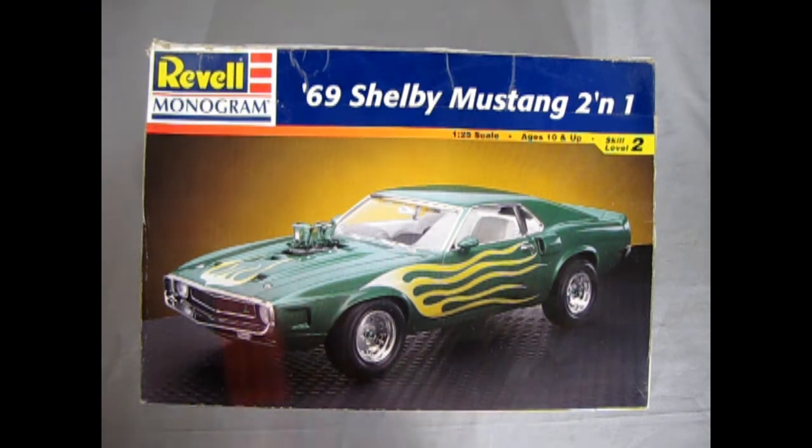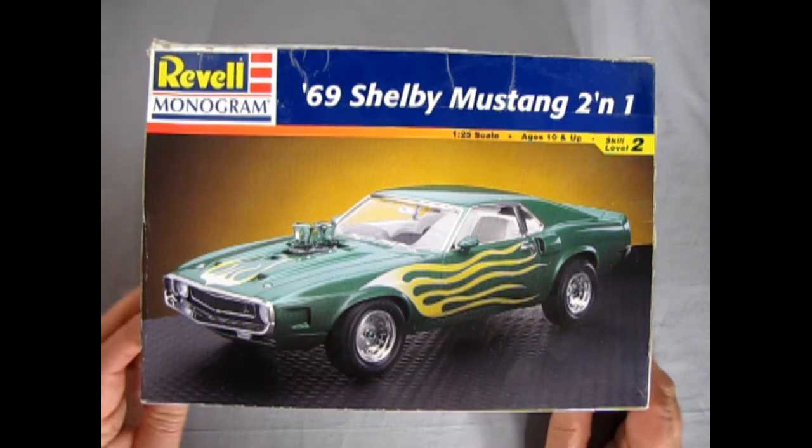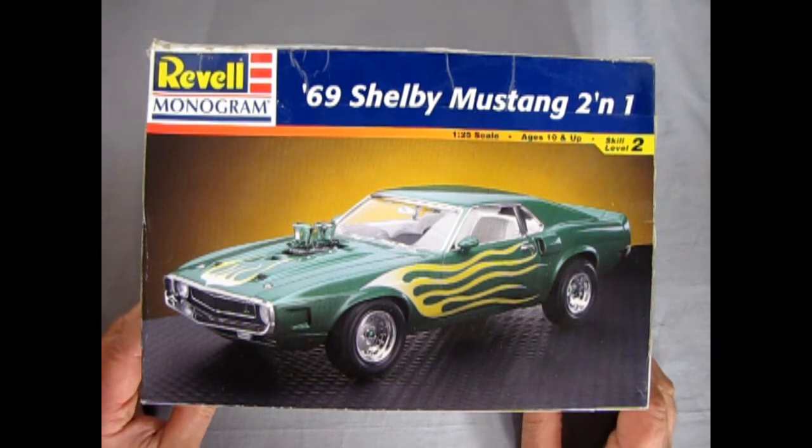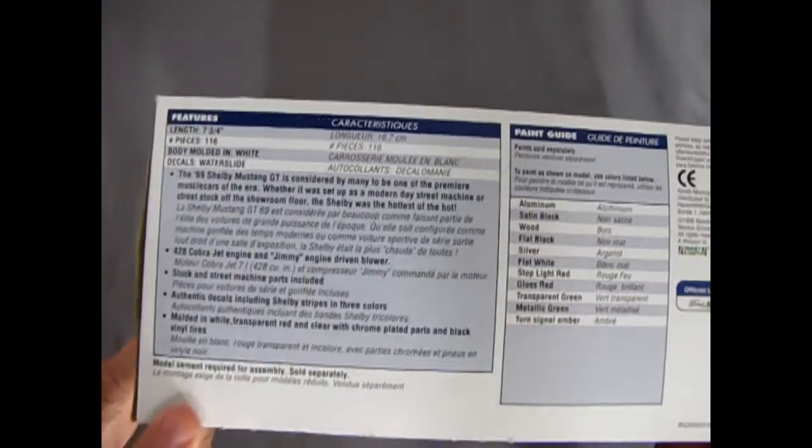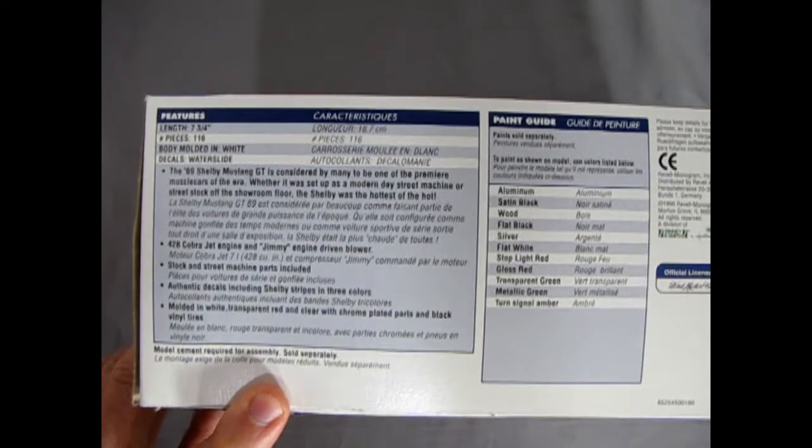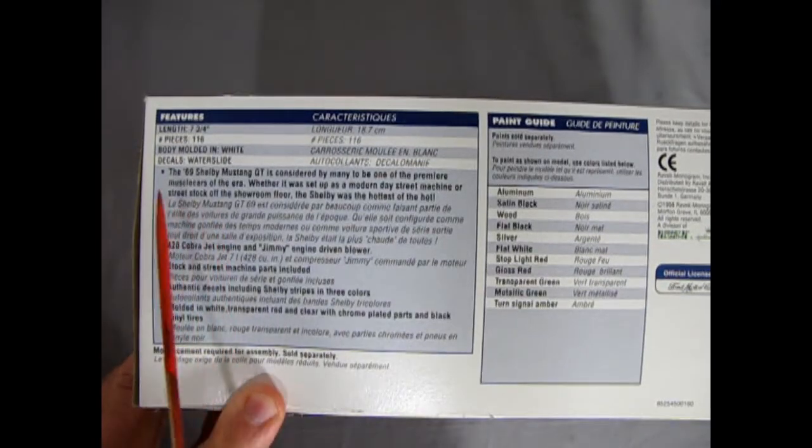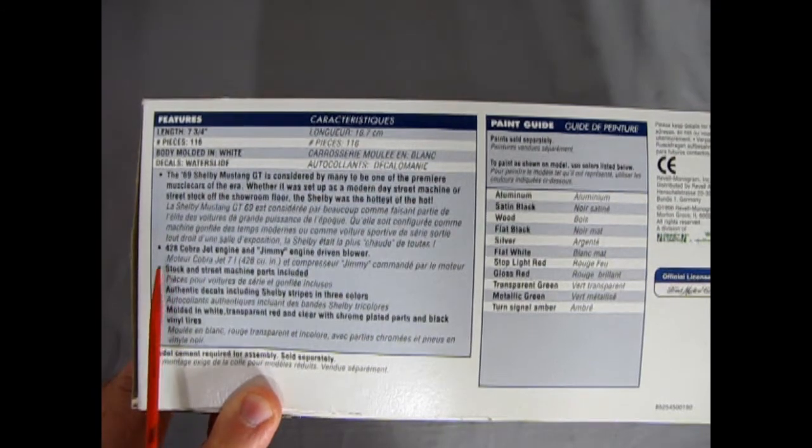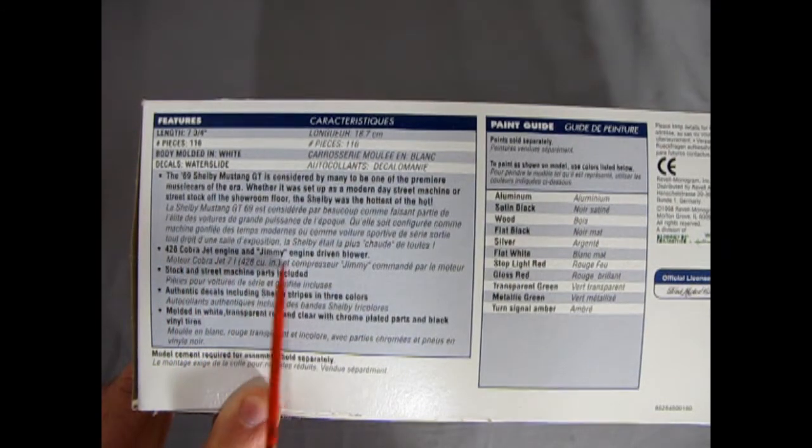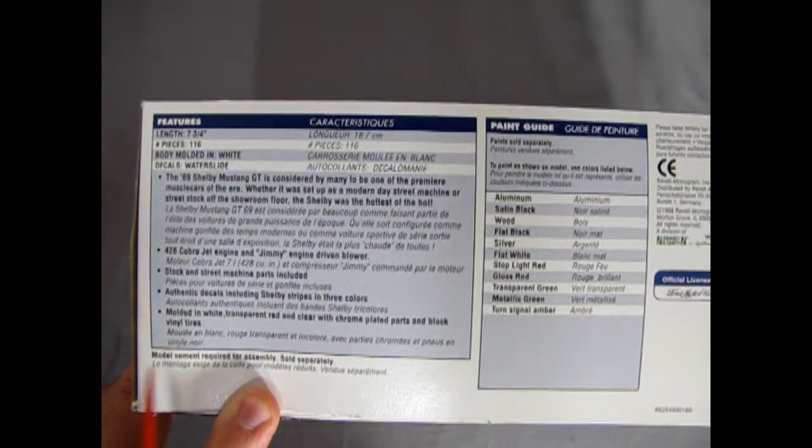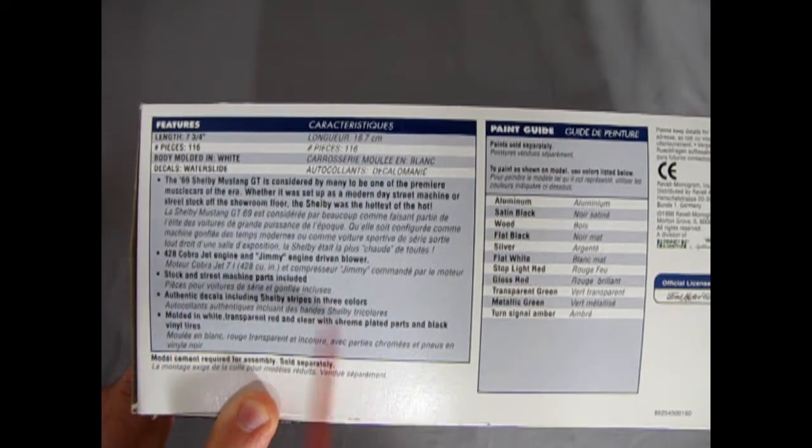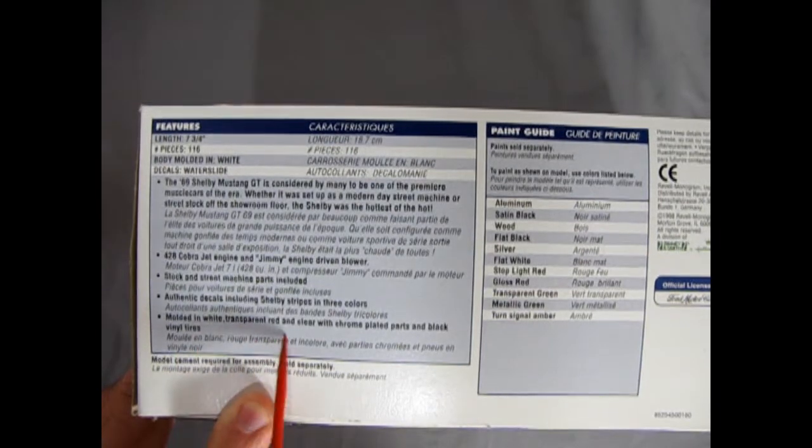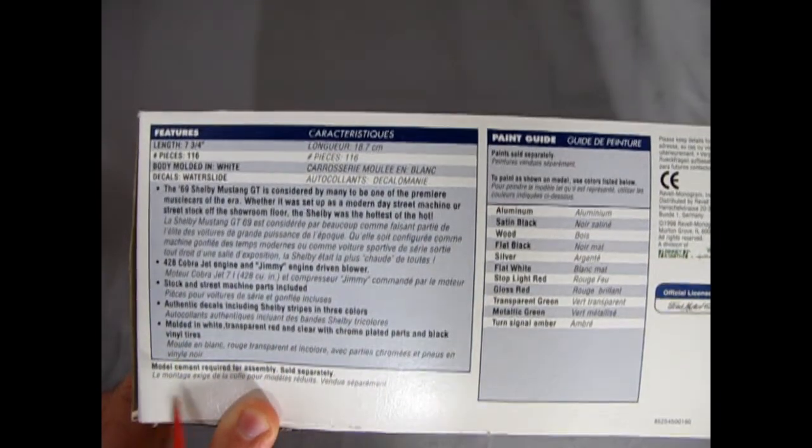In many of these kits they've redone the wheels and everything. So this one is a kit that I got second hand. And there are a few missing bits, I hate to say. But as we turn up the box here, we can hear a big thud as all the parts fall inside. The body is molded in white. Waterslide decals. This has the big 428 Cobra Jet engine and Jimmy engine driver blower. Authentic decals including Shelby stripes in three colors. Molded in white, transparent red, and clear with chrome plated parts and black vinyl tires.